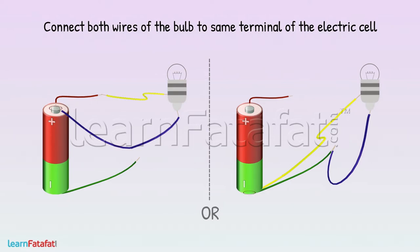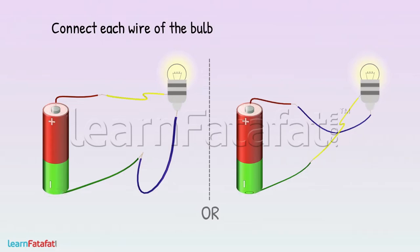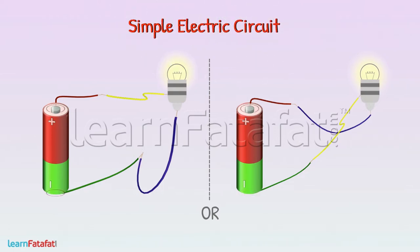However, if we connect each wire of the bulb to separate terminals of the cell, the bulb lights up. This is our simple electric circuit.